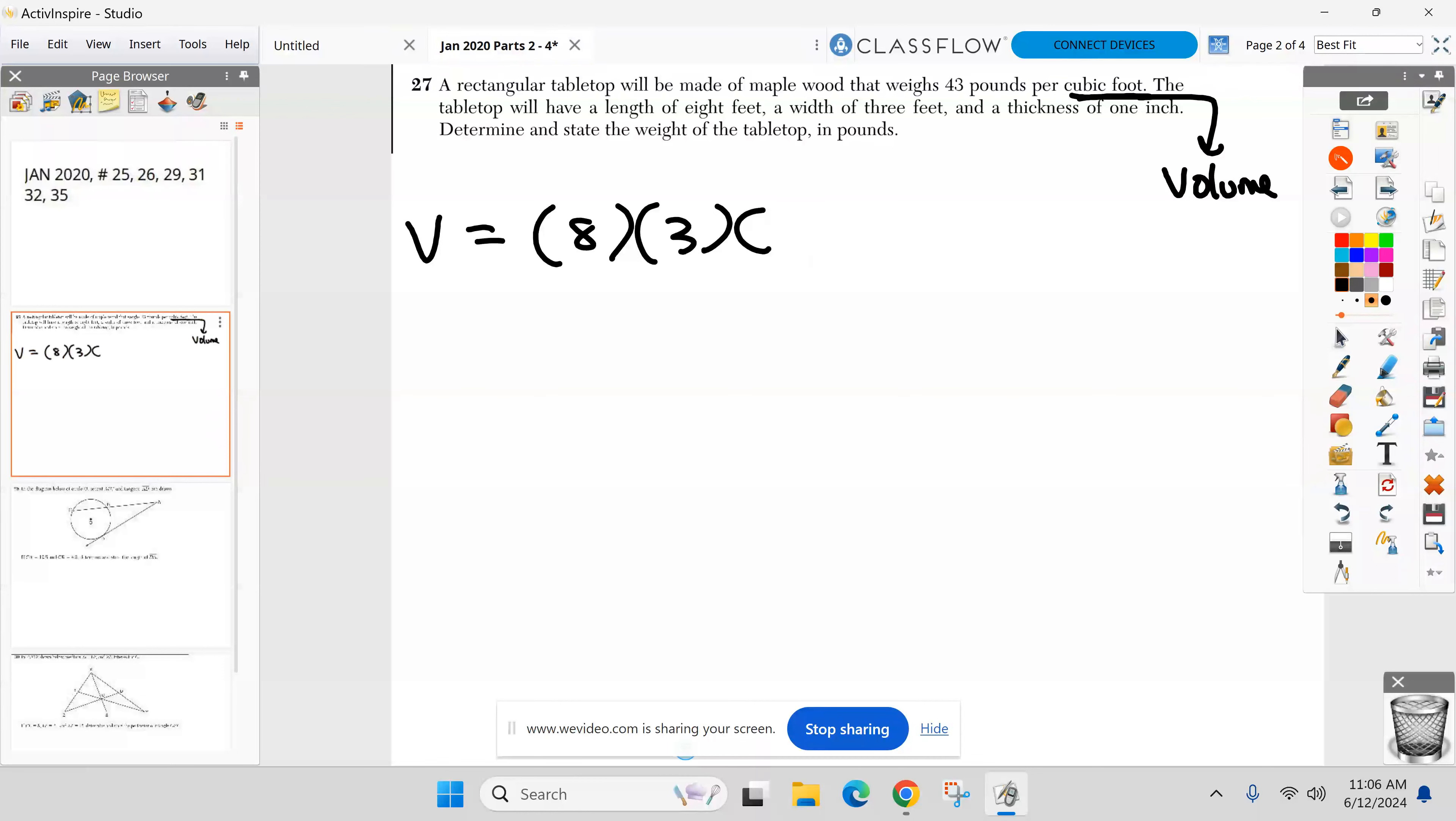So before I do anything, I need to convert that one inch into feet. Don't do it. Oh, somebody asked me in my first period class, can I just change everything to inches and then convert it into feet? No, you can't because you're about to use this conversion right now. That 12 inches equals one foot. That is not the same for cubic inches and cubic. That is incorrect. That's an incorrect conversion. That's why I need you to do it at the beginning.